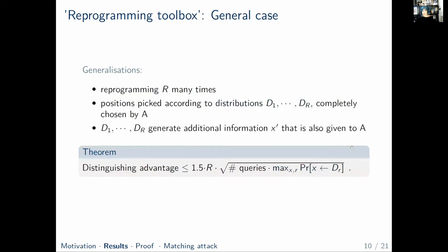The resulting bound is in spirit very similar to what we've seen before: we just replace the term relative to the size of the second half with the maximum probability of any element to be drawn from any of those distributions. The last generalization is a scenario in which these distributions also generate some additional side information x', which is forwarded to A along with the reprogramming position. This does not change the bound.